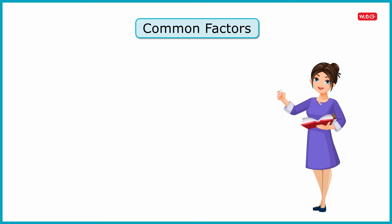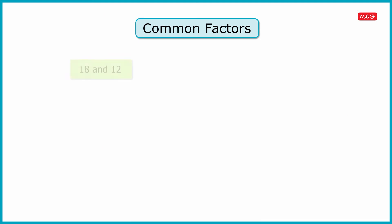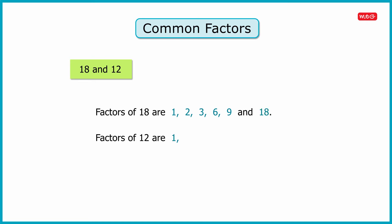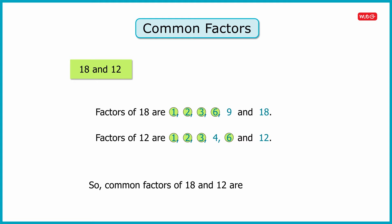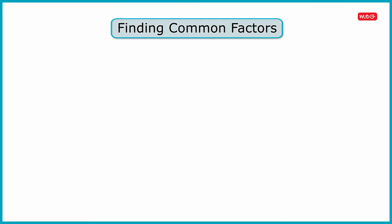With the help of an example, consider two numbers: 18 and 12. Factors of 18 are 1, 2, 3, 6, 9, and 18. And factors of 12 are 1, 2, 3, 4, 6, and 12. Here the factors that are common for both the numbers are 1, 2, 3, and 6. So we can say that the common factors of 18 and 12 are 1, 2, 3, and 6.